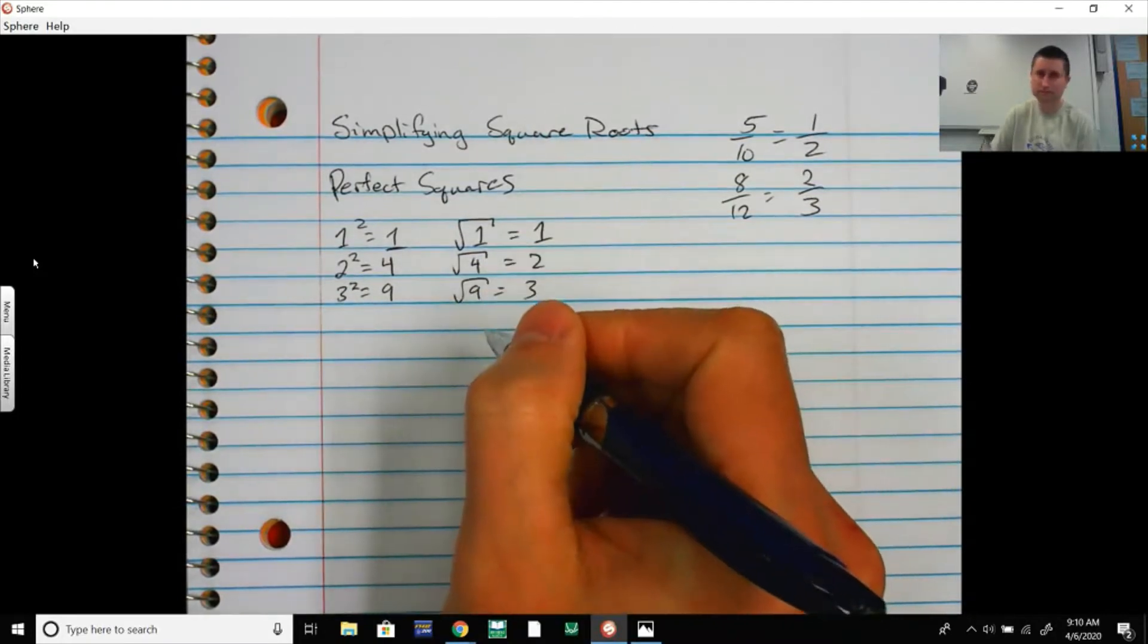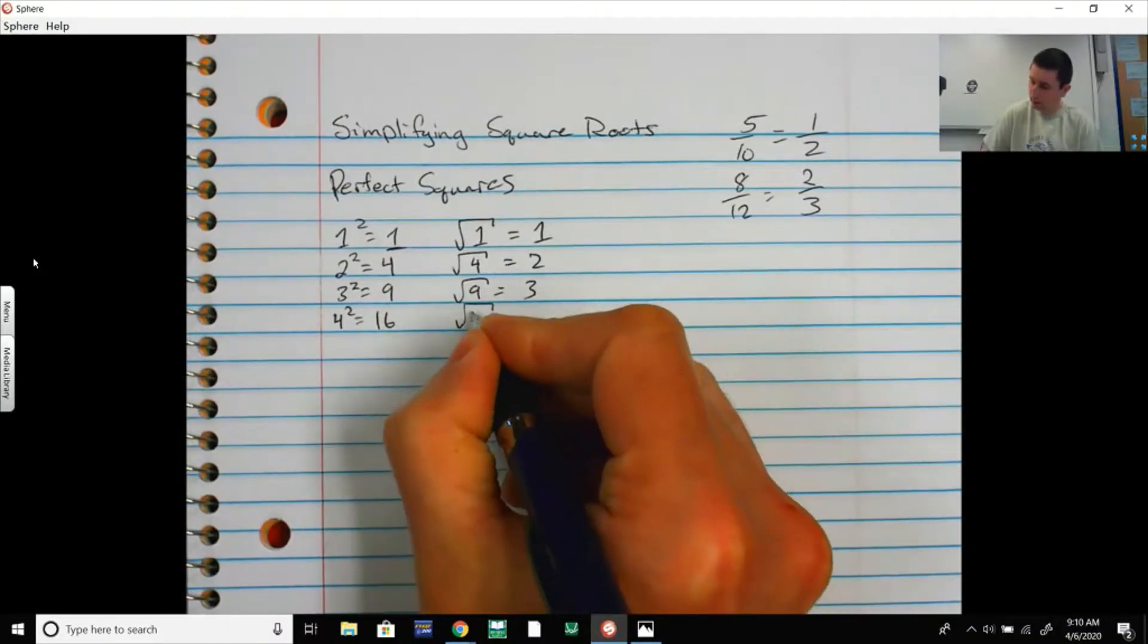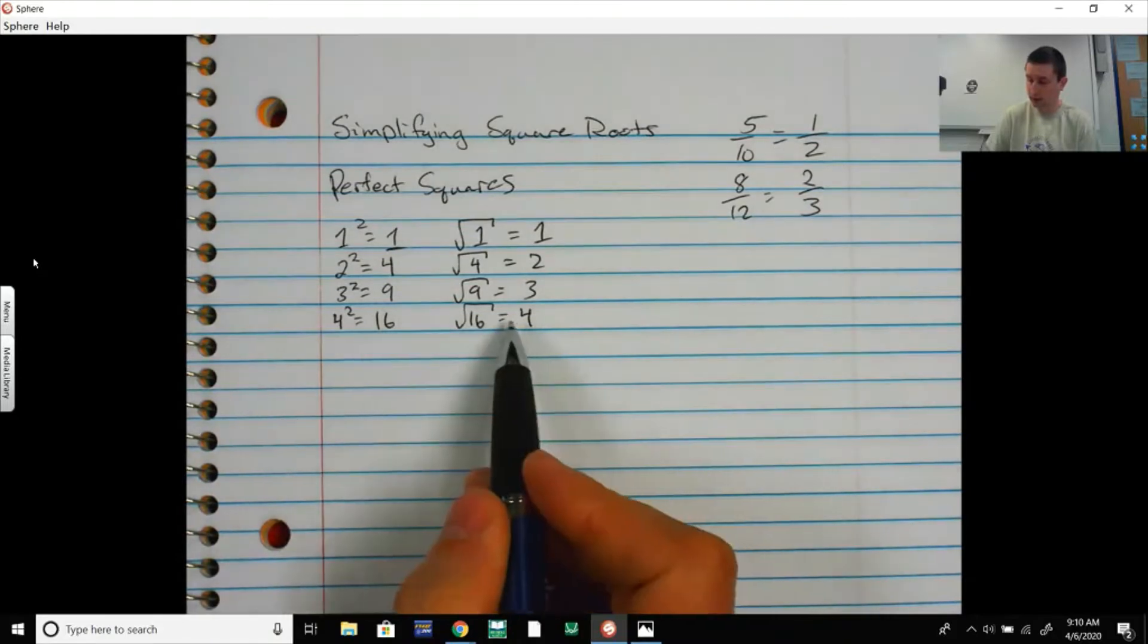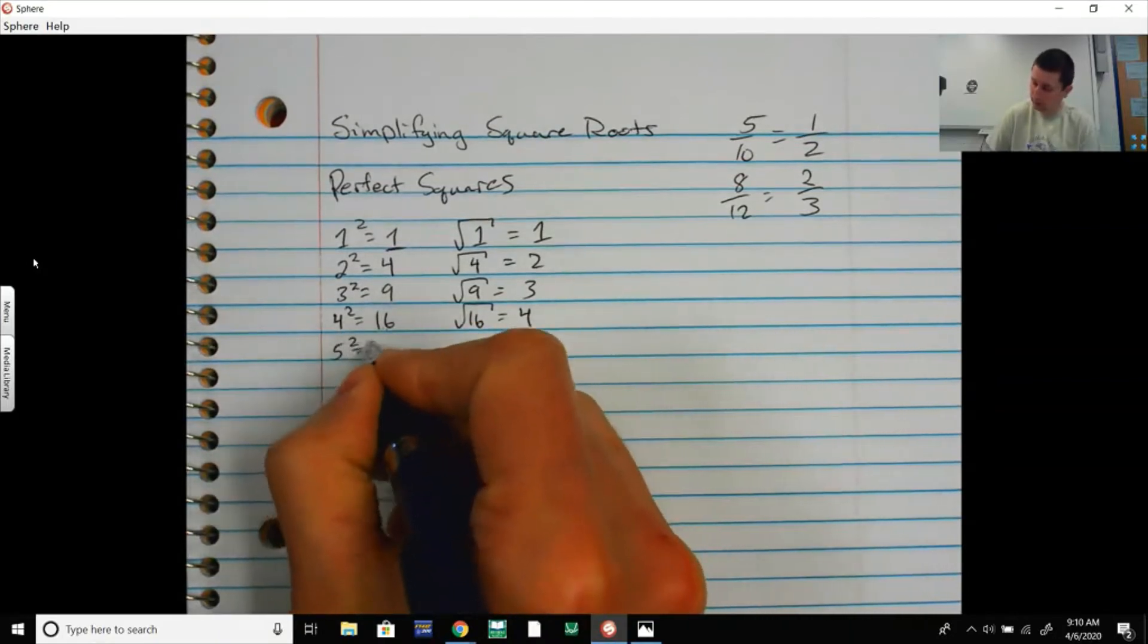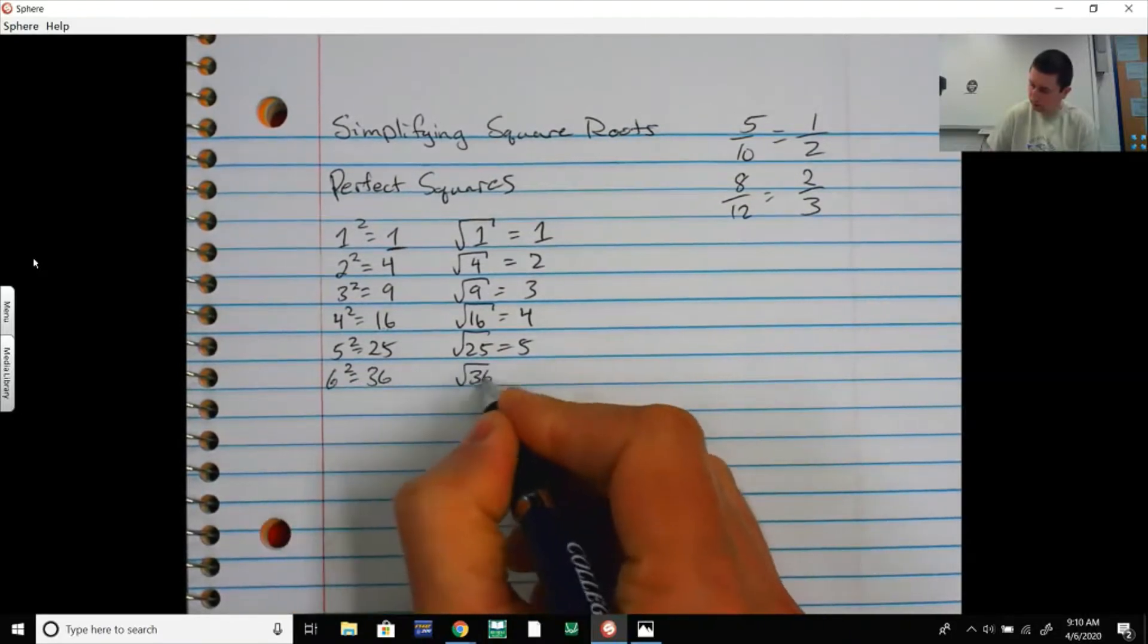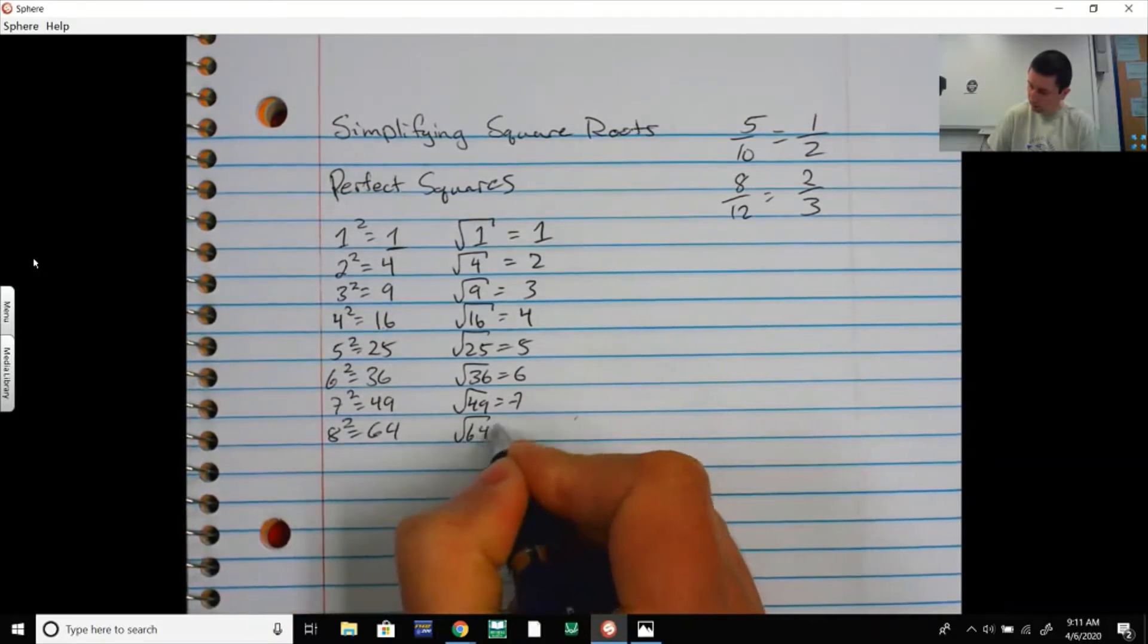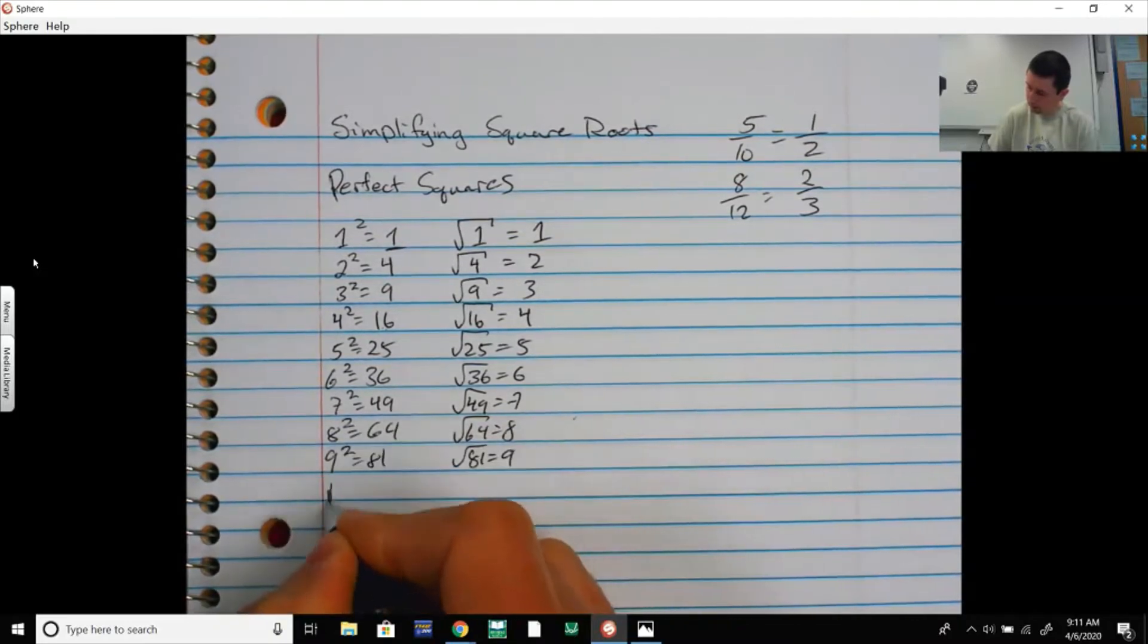So 4 squared is 16. Square root of 16 is 4. These would be inverse operations. Squaring and square rooting are inverse operations because when you take the square root of this answer, you get what you started back with. So 5 squared is 25. Square root of 25 is 5. 6 squared is 36. The square root of 36 is 6. The square root of 49 is 7. 8 squared is 64. The square root of 64 is 8. 9 squared is 81. The square root of 81 is 9.